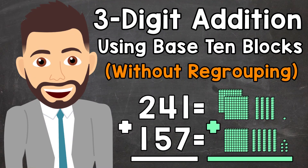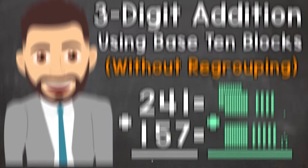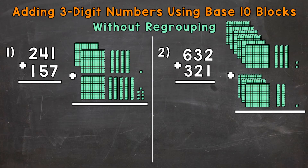Welcome to Math with Mr. J. In this video, I'm going to cover adding 3-digit numbers using base 10 blocks. These problems are going to be without regrouping. Using base 10 blocks is going to help us visualize what's going on within these problems and give us a better overall understanding of addition. So let's jump into number 1 where we have 241 plus 157.